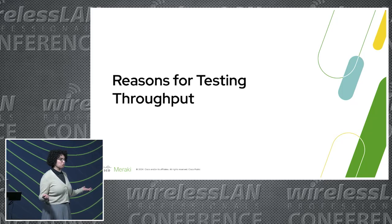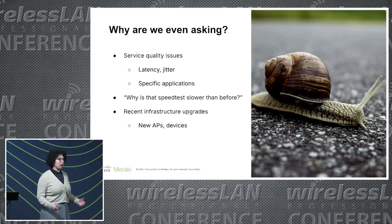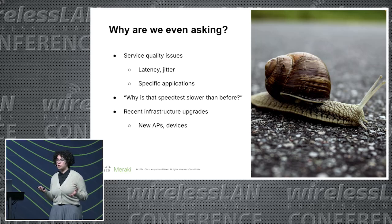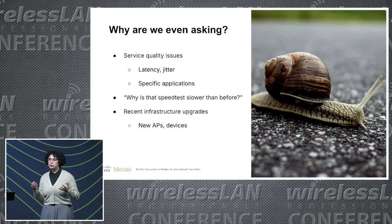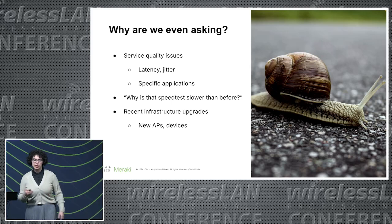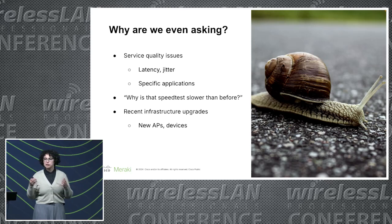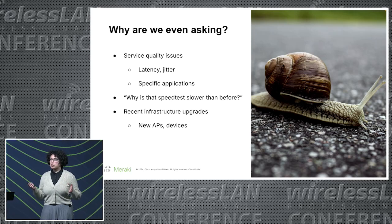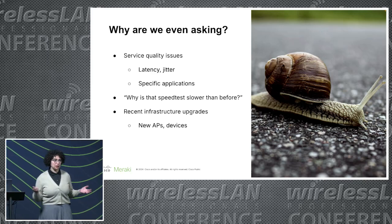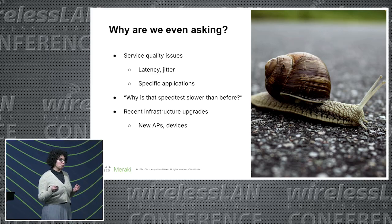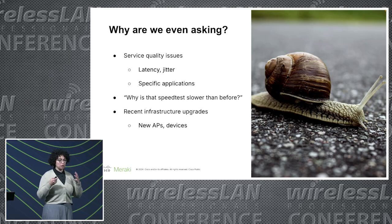So first off, why would you even test throughput? The inherent answer is somebody's complaining about a certain application that doesn't work like it should and they're having a poor experience. In other cases, you'll get somebody that swaps out new APs for an install and says, hey, I was getting 500 megabits per second before, now I'm getting 300 megabits per second — what's going on? We'll need to know the reason why to really dig down and see whether we should even be looking at throughput in the first place.